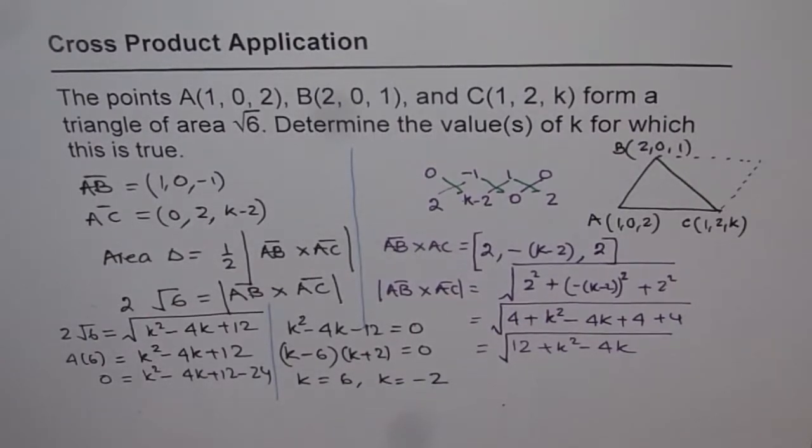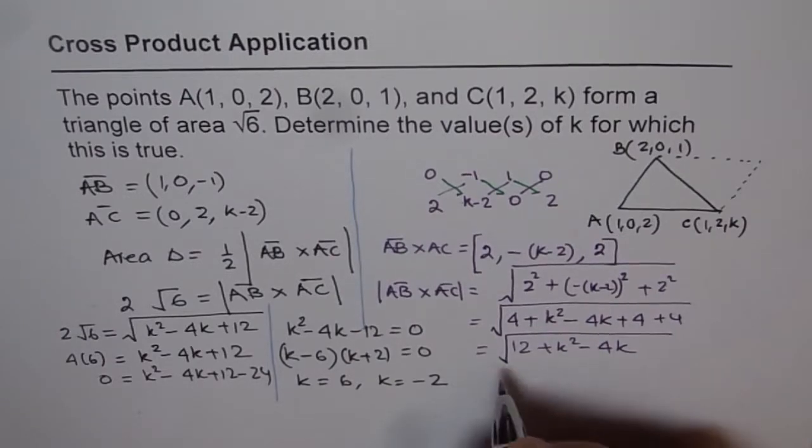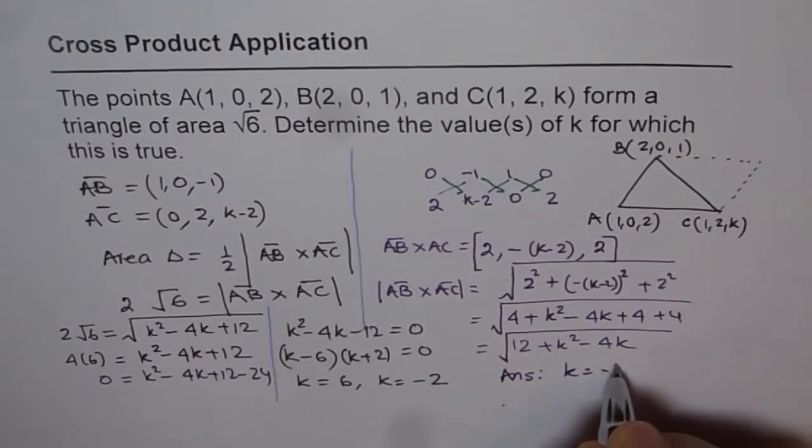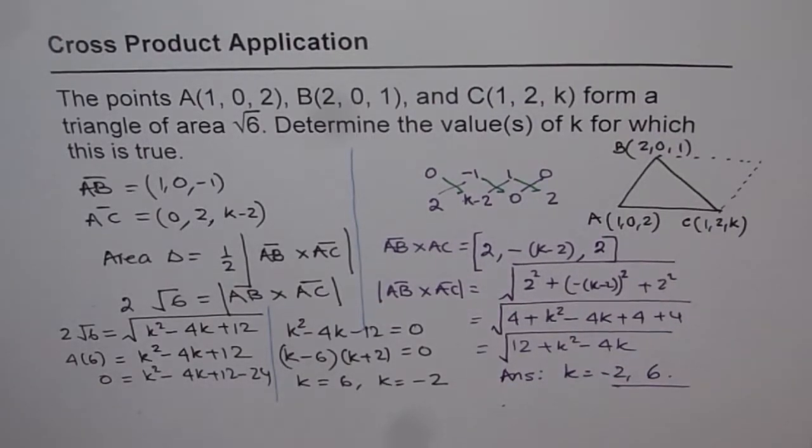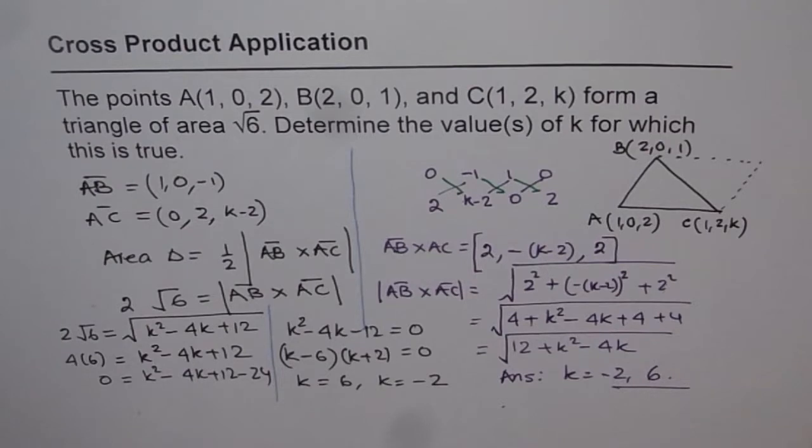The method is: given three points, find the vectors forming the sides of the triangle. The cross product's magnitude gives the parallelogram area; half of that gives the triangle area. Equate that to the given area and solve for the unknown k value. Thank you and all the best.